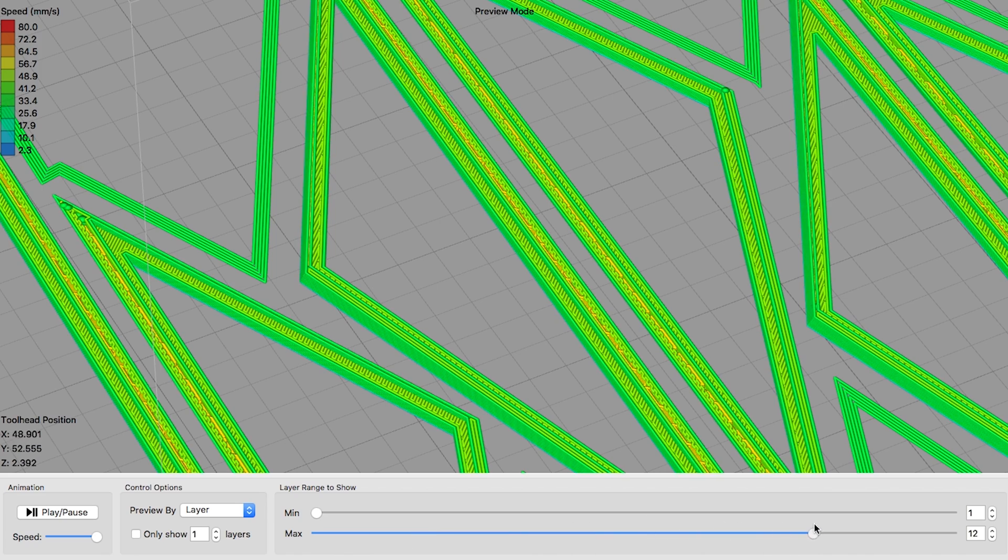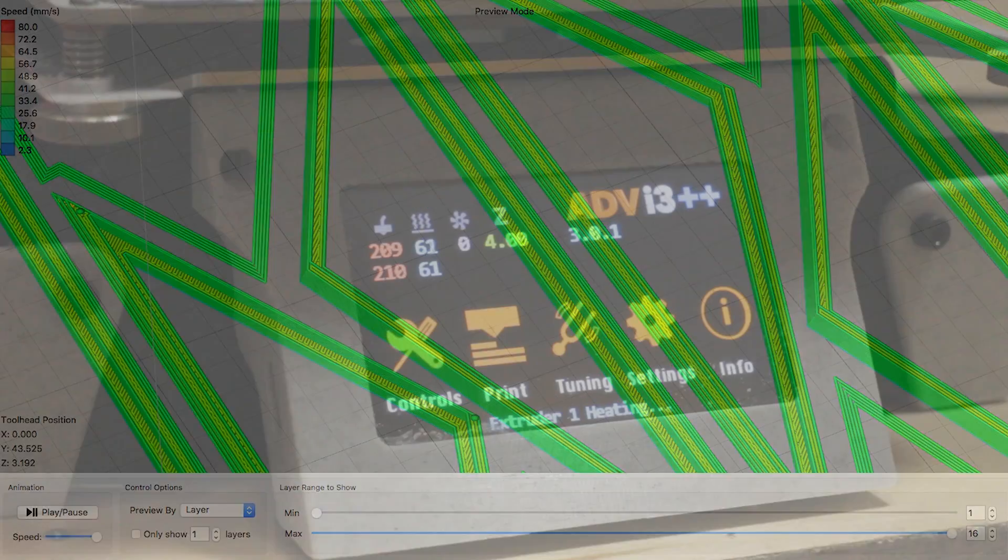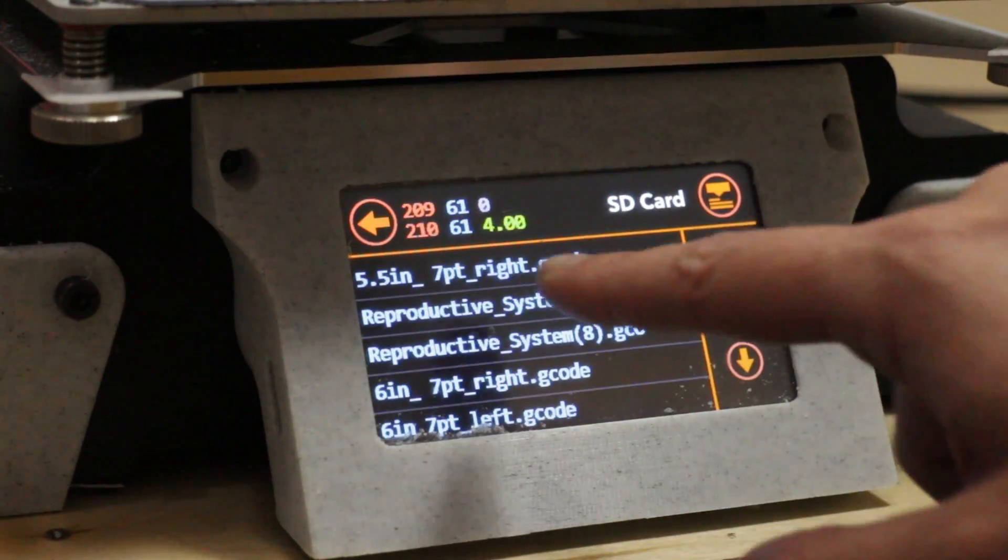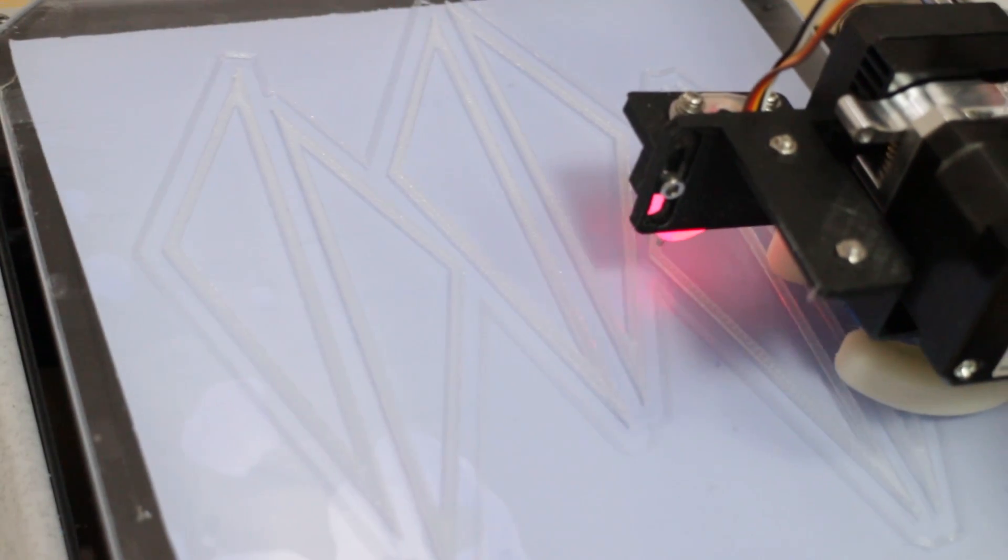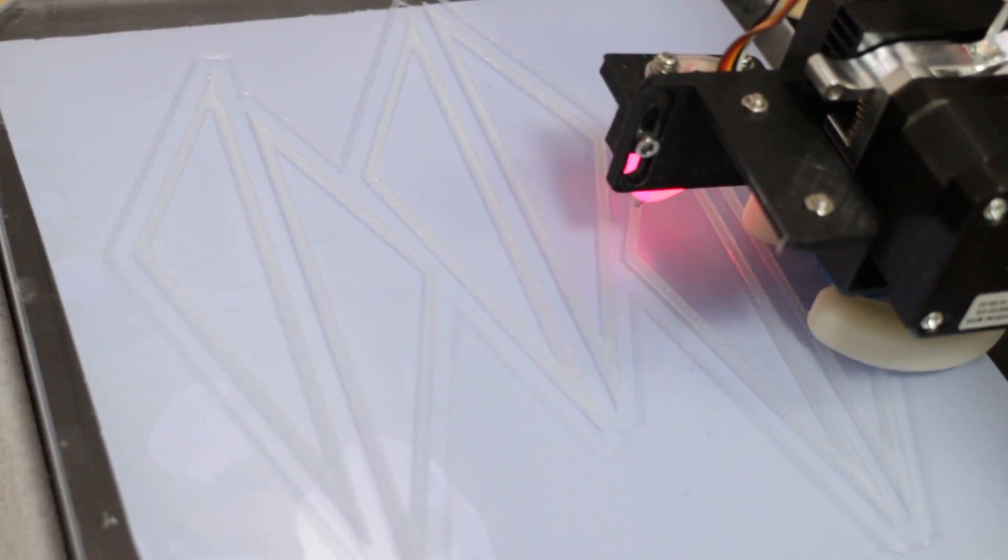Once the design was finalized I use Simplify3D to generate the g-code and toolpath for my 3D printer. I'm using a modified Monoprice Maker Select Plus 3D printer with a 0.4 millimeter nozzle and clear PLA filament.